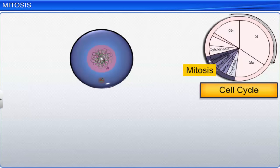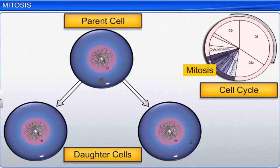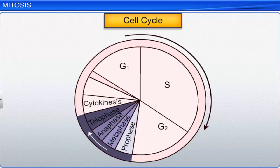During mitosis, the parent cell divides into two daughter cells, which are not only identical to each other, but also to the parent cell. Mitosis is also known as equational division, as both the parent and the daughter cells have the same number of chromosomes. Mitosis is a continuous process; however, for convenience, it is divided into four stages of nuclear division: prophase, metaphase, anaphase, and telophase.